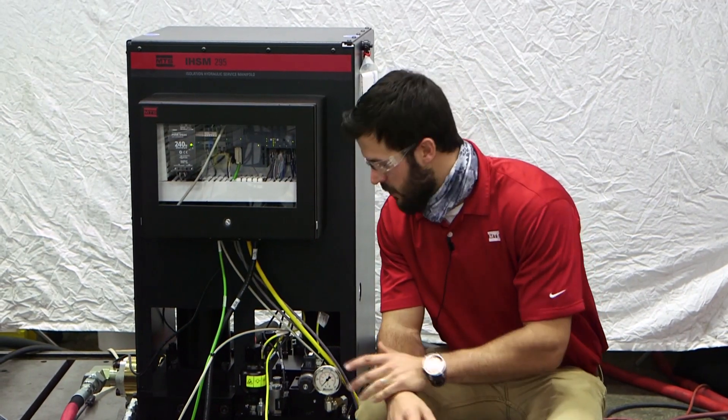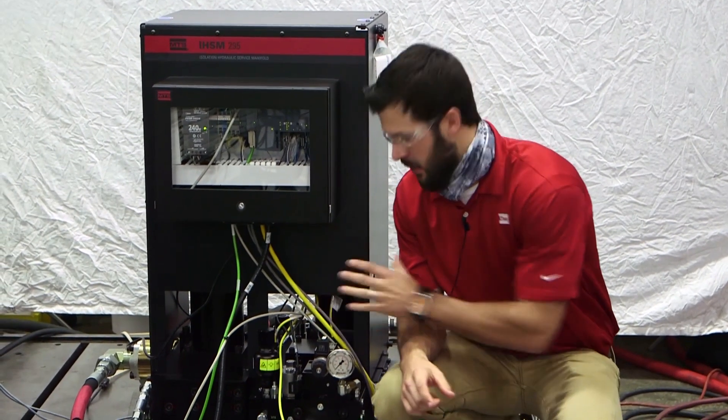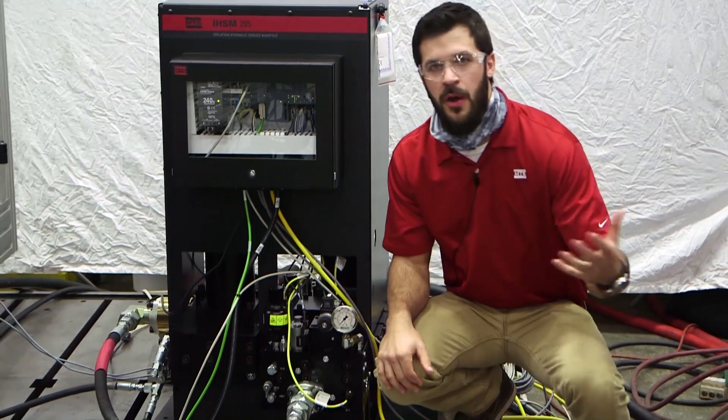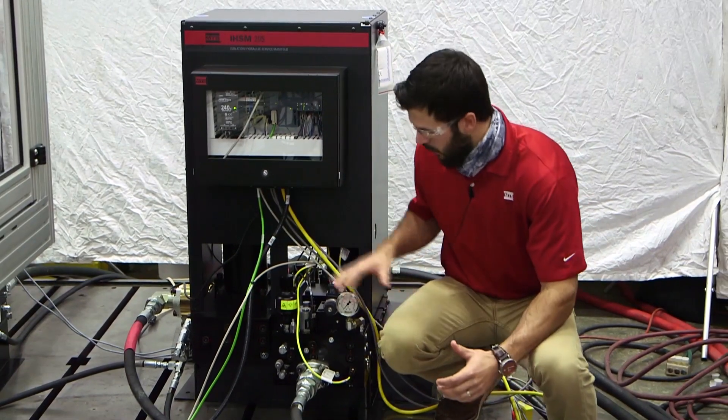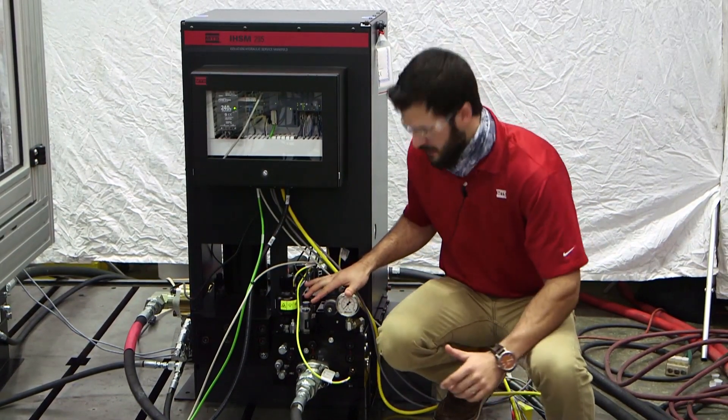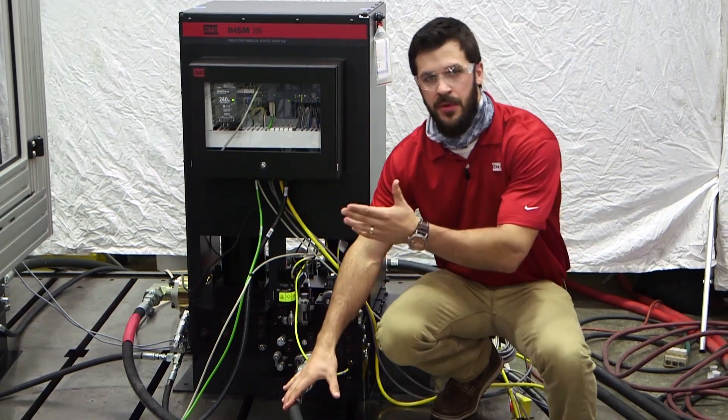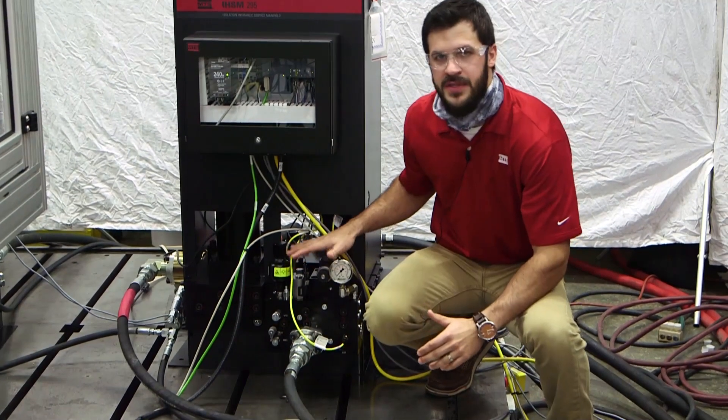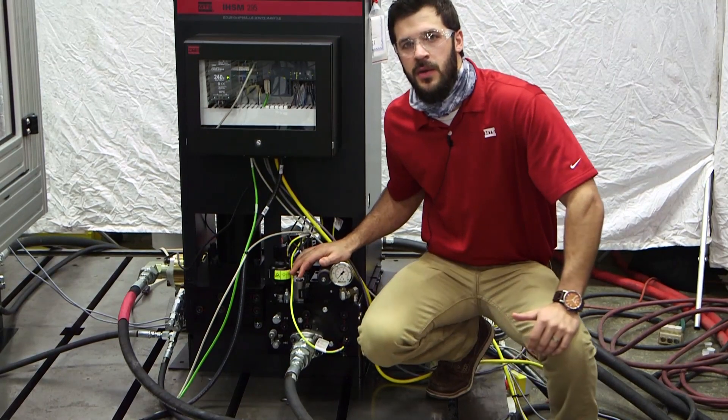This one here is a one station control manifold. So for this system with one power unit and one damper frame, we only needed one control station. This is what feeds the damper. This is where all the safety valves are located with the sensors.